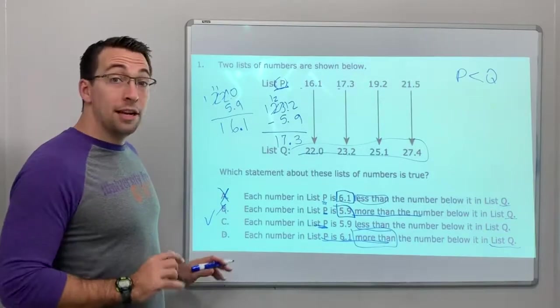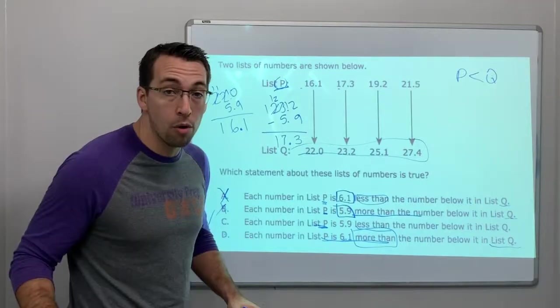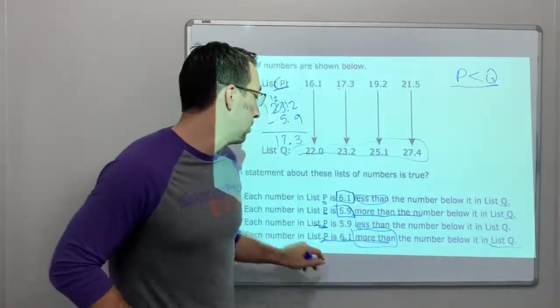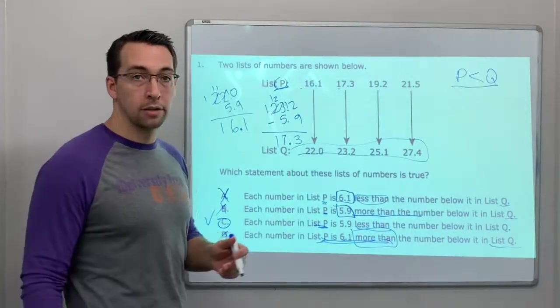And then D. Each number in the list, in list P is 6.1 more than, no. P is less than Q. P is not more than, less Q. So it is, indeed, C is our answer.